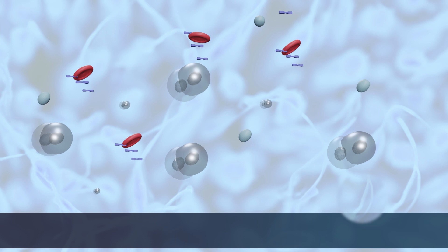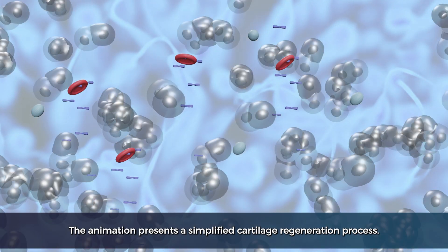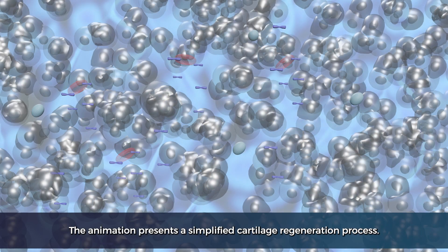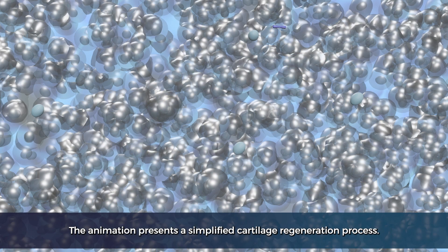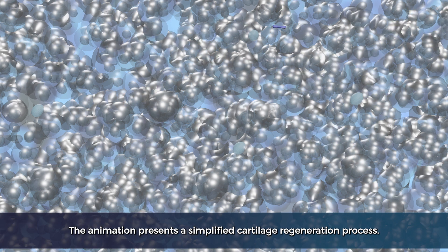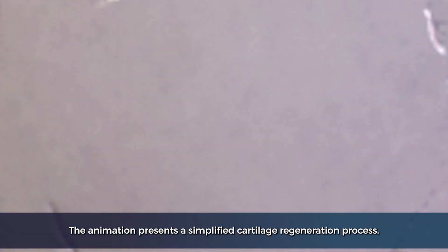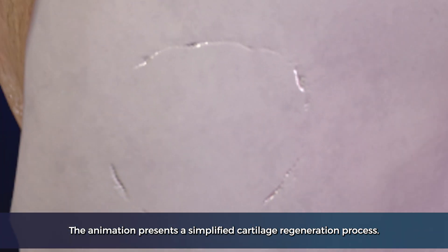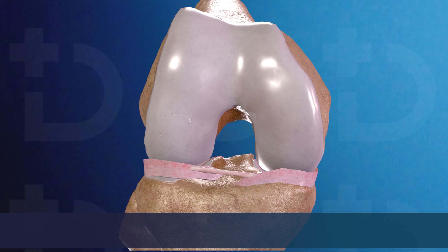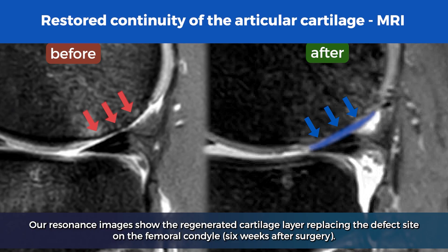The animation presents a simplified cartilage regeneration process. MRI images show the regenerated cartilage layer replacing the defect site on the femoral condyle, six weeks after surgery.